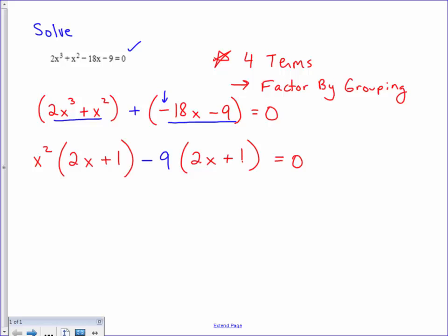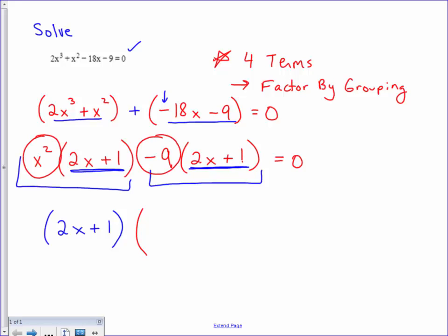Now in order for factor by grouping to work you have to have the same values inside each group at this point. And so if those two values are not the same you've either made a mistake or it won't factor by grouping. Now in this case they are the same and so what you do is you write that factor that is repeated only once. What you're doing is you're saying both groups share the 2x plus 1. Now that that's been factored out what's left over are the values in front of those groups, the x squared minus the 9. And then of course you still have your equal 0.